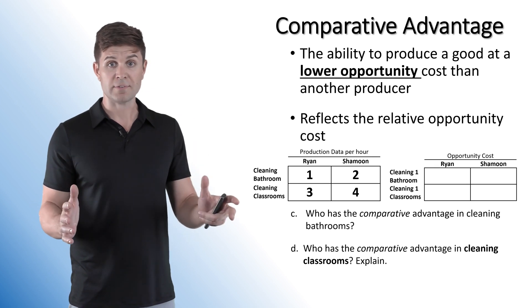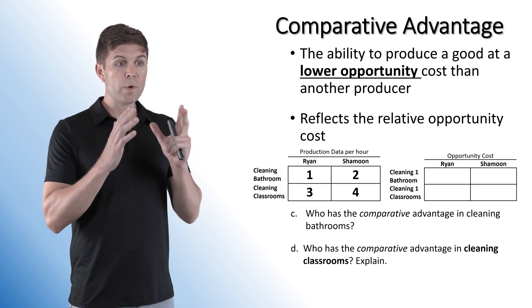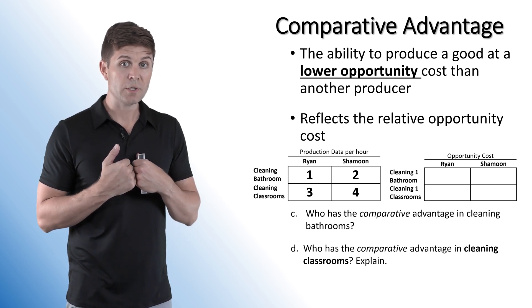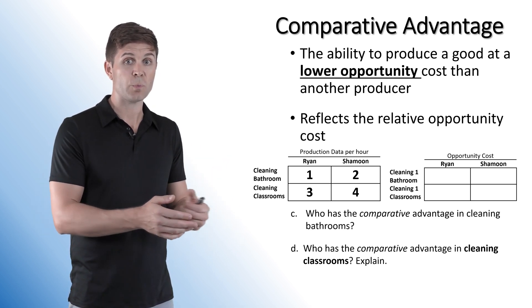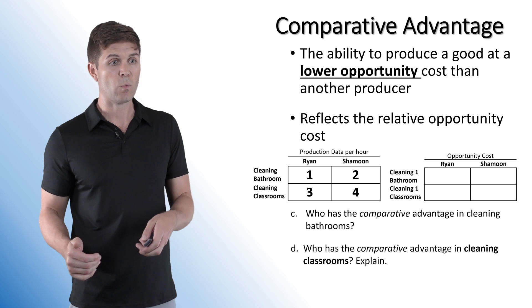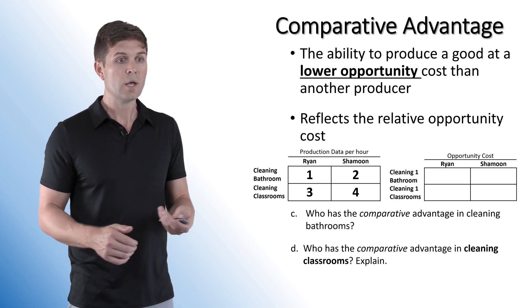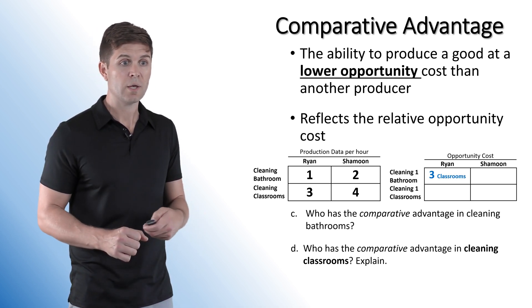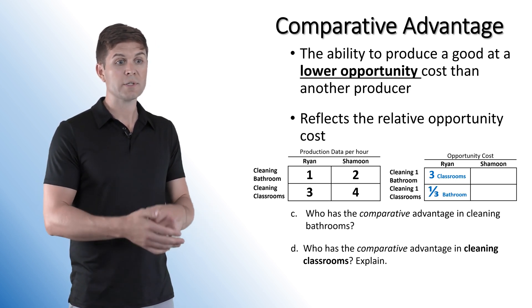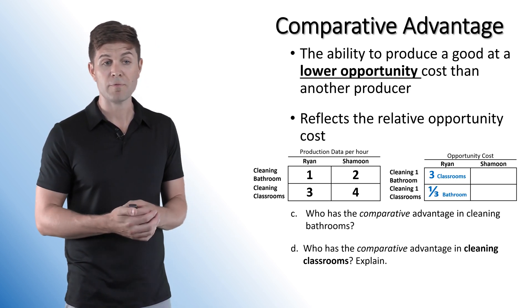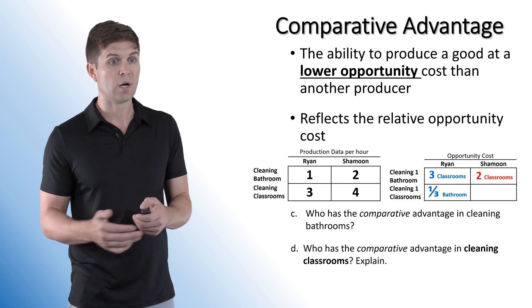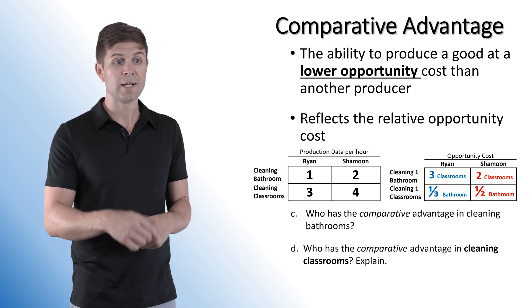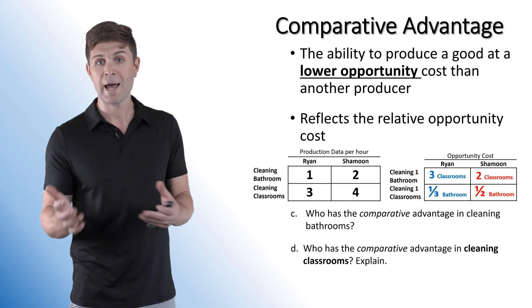Looking at Ryan and Shamoon again, we need to find the opportunity cost. We're given production data, so it's going to be what we sacrifice divided by what we produce. Ryan's opportunity cost for cleaning one bathroom is three classrooms, and for one classroom it's one-third of a bathroom. Shamoon's opportunity cost for cleaning one bathroom is two classrooms, and for one classroom it's one-half of a bathroom.